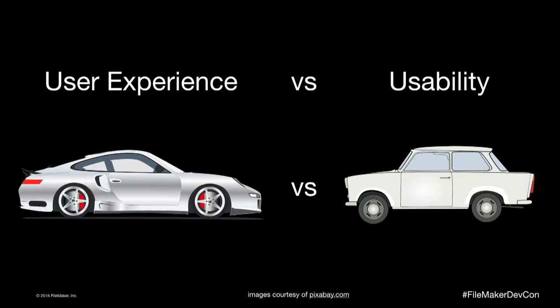To highlight what I'm talking about as simply as possible, I use this diagram to explain the difference between a user's experience and usability. In this diagram - and money is no object - we ask people: what car would you choose? In terms of usability they're exactly the same: they've both got a steering wheel, a handbrake, and if you've got a driving license you can drive both. But every time I've asked people which car they'd choose, the majority go for the Porsche.